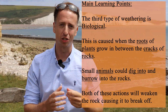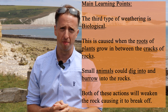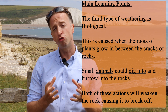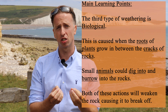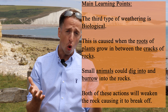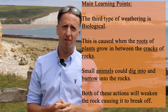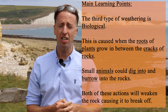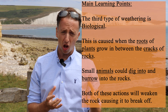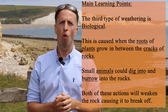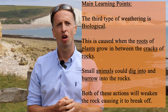The next type of weathering is biological weathering. This is when the roots of plants grow in between the cracks of rocks, or small animals could dig into and burrow into the rocks. Both of these actions from plants and animals will weaken the rock, causing it to break off.